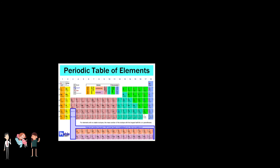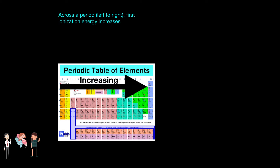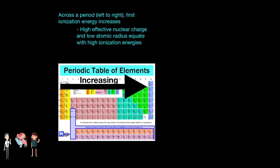Generally, as you go from left to right across a period, the first ionization energy increases. This is because as you go across, the effective nuclear charge increases and atomic radius decreases. High effective nuclear charge means electrons, including the valence electrons — which are generally the most loosely held — are strongly attracted to the nucleus. A small atomic radius means that the distance between the valence electrons and the nucleus is small. High effective nuclear charge and low atomic radius equate with higher ionization energies.